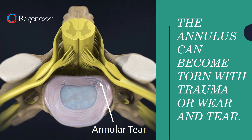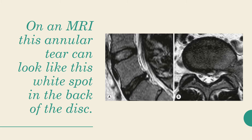The annulus can become torn with trauma or wear and tear, as is shown here with the annular tear I'm pointing to. On an MRI, this annular tear can look like a white spot in the black of the back part of the disc, just like you see here — this little white spot.